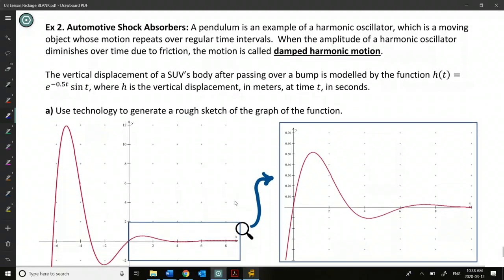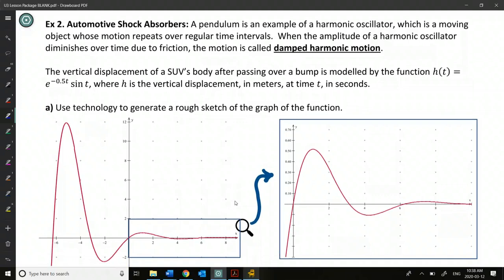All right, so automatic, automotive shock absorber, absorbers, that's a weird word, they are an example of what we call damped harmonic motion. So it's basically a pendulum, and we call this a harmonic oscillator. Have you guys talked about this in physics? Yes? Okay.